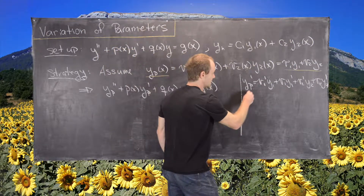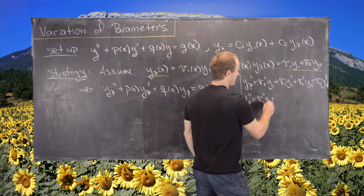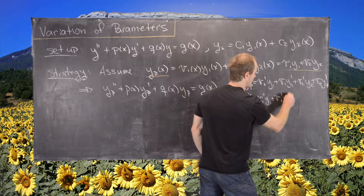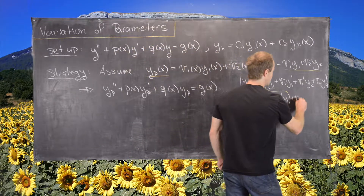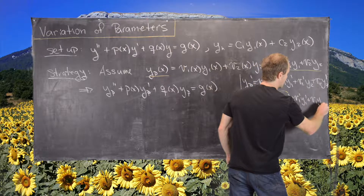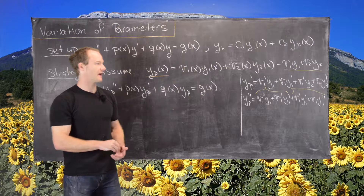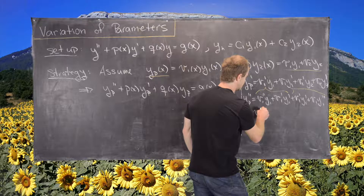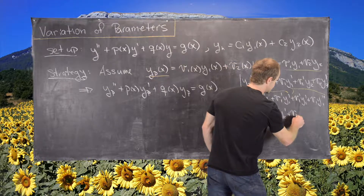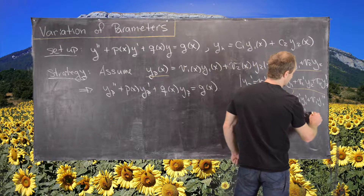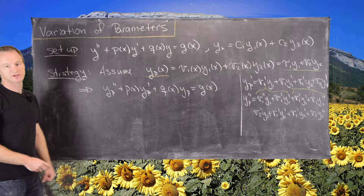Then yp″ requires applying the product rule again to each term. We get: v1″·y1 + v1′·y1′ from the first term, plus v1′·y1′ + v1·y1″ from the second term, plus v2″·y2 + v2′·y2′ + v2·y2″ from the remaining terms. Now we can plug this into our differential equation.